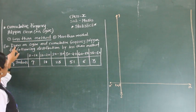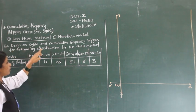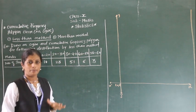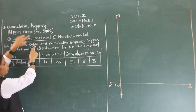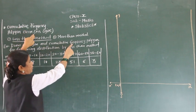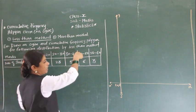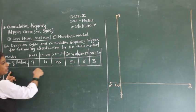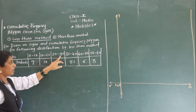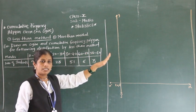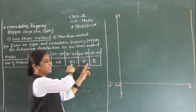The example is: draw the ogive and cumulative frequency polygon for the following distribution table by the less than method. The distribution table gives marks from 0–10, 10–20, 20–30, 30–40, 40–50, and 50–60, with number of students: 7, 10, 23, 51, 6, and 3.